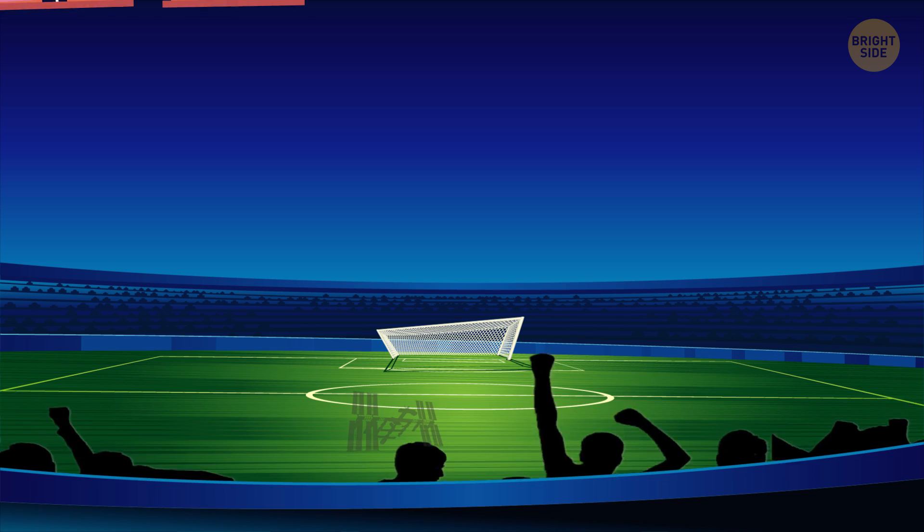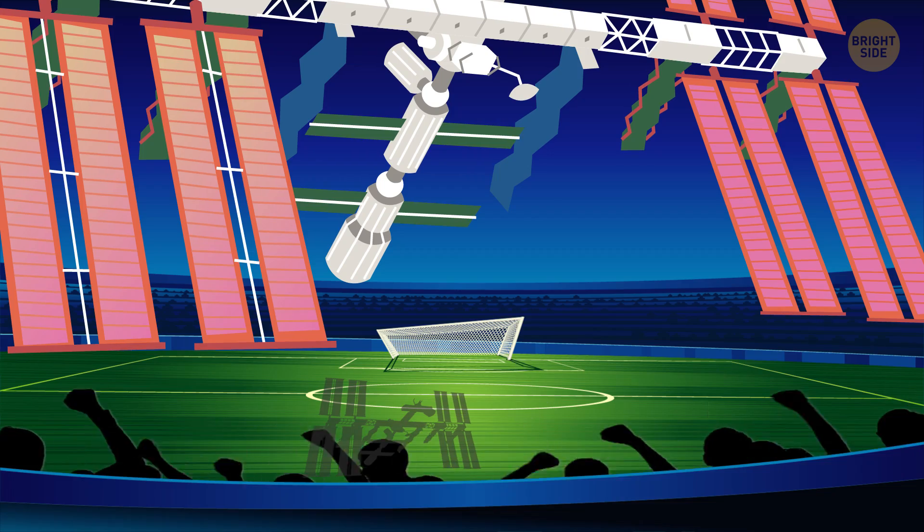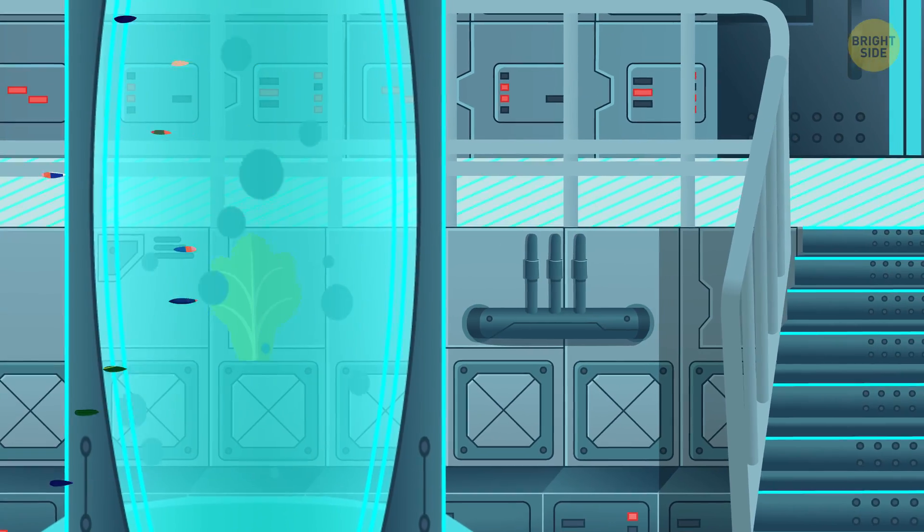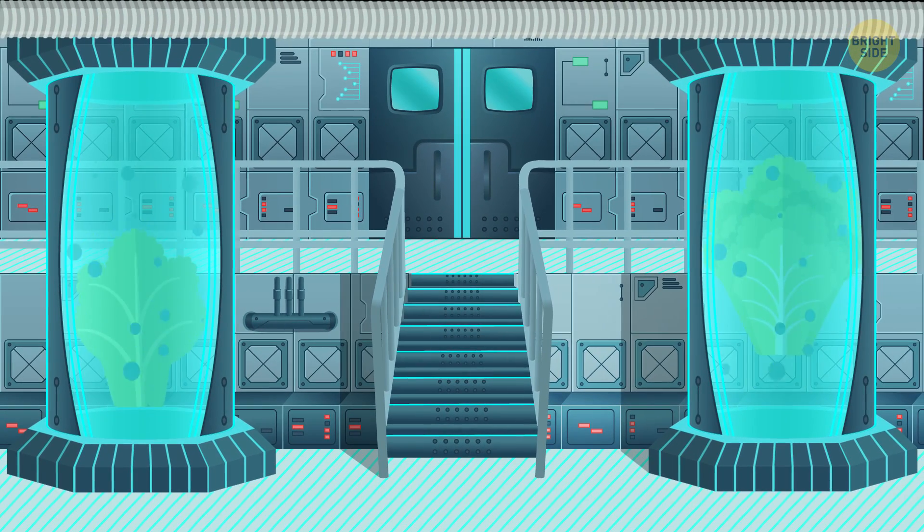Plus, the ISS might be as long as a football field, but it's not like they have a lot of room for a sprawling garden. Well, the good news is, they've already figured out a solution to all this, and astronauts are growing food up there.